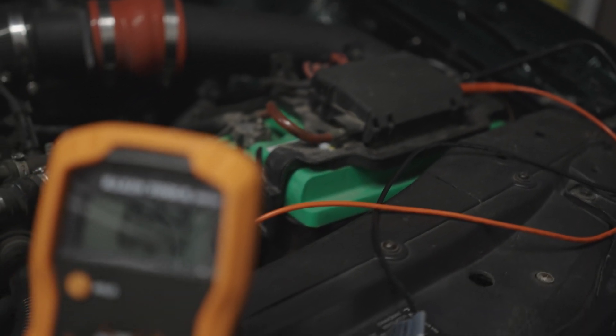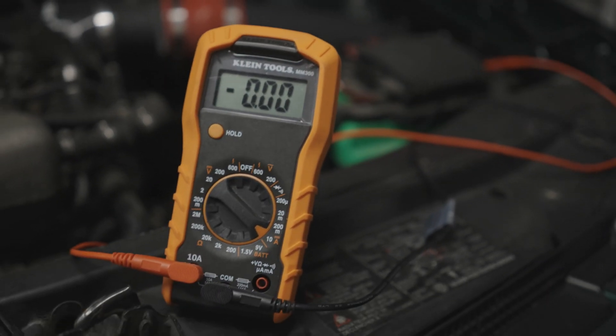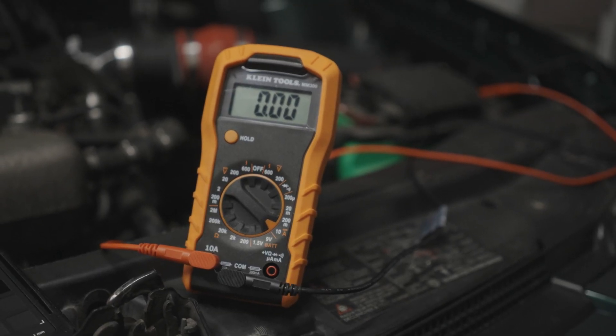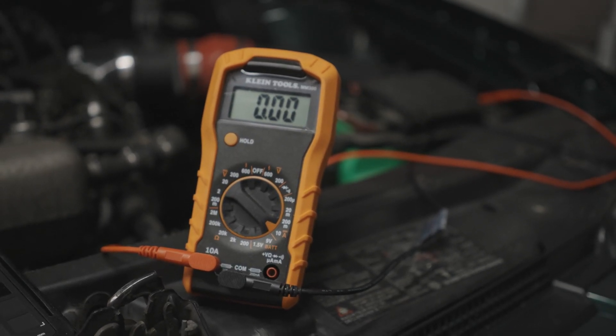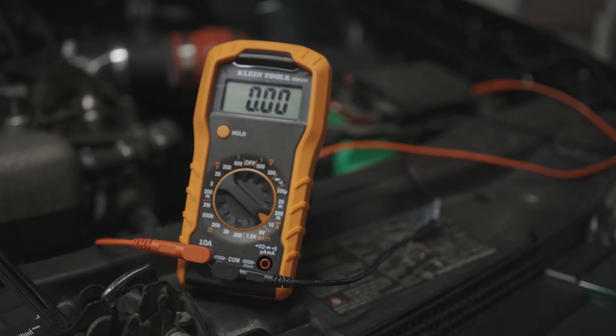While trying to measure the amp draw on a car battery I was getting a value of zero. There should always be some amount of draw so I knew something was wrong. Being that this is a new multimeter and showed no other signs of failure in the probes or the meter itself, I thought it best to start by checking the fuses.